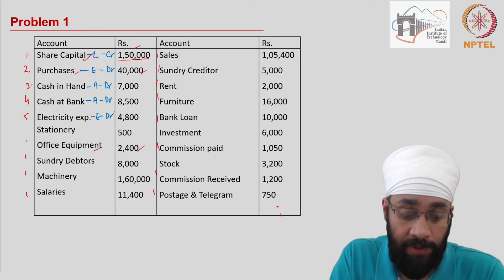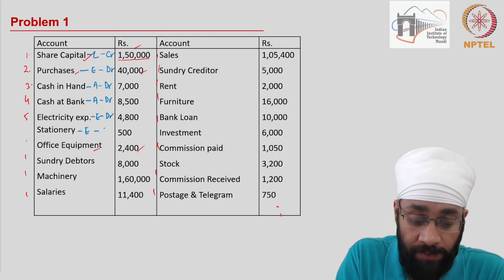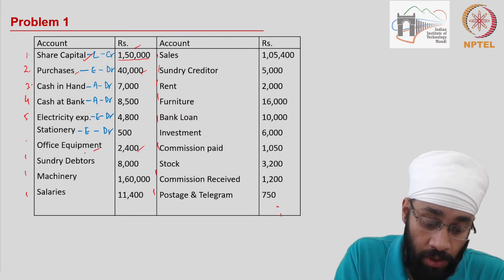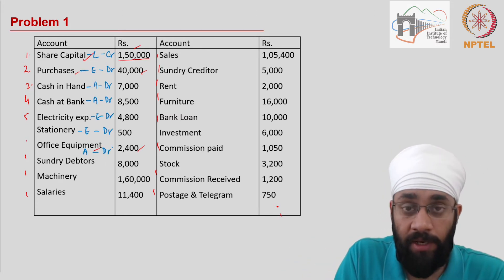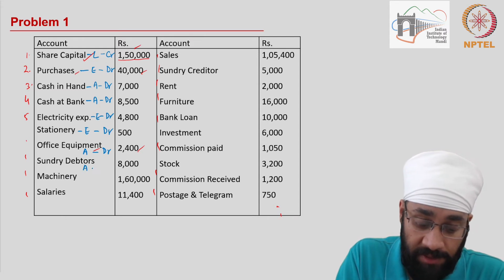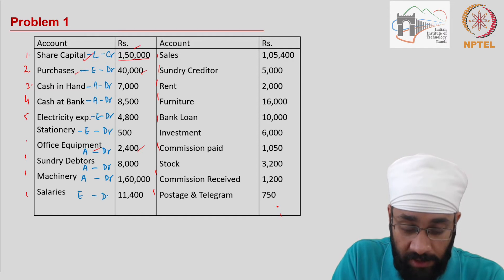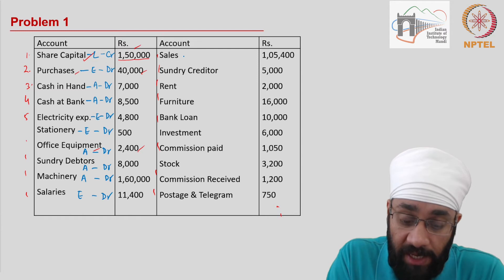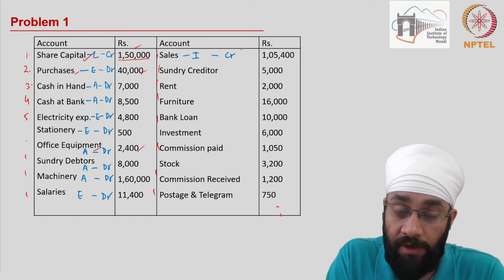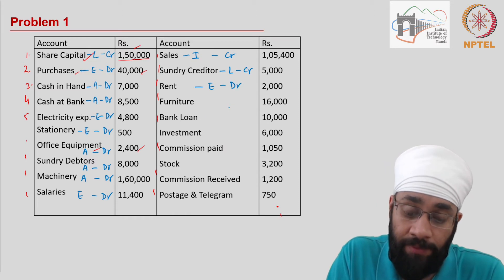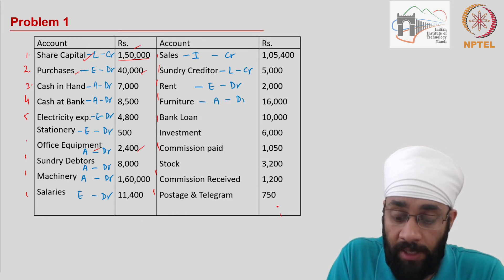Electricity expense, all expenses have debit balance. Stationery is also an expense, hence a debit balance. Office equipment is asset, debit balance. Sundry debtors are assets, debit balance. Machinery is also an asset, hence debit balance. Salaries are expenses, again debit balance. Sales is income and hence a credit balance. Sundry creditors are liabilities, credit balance.